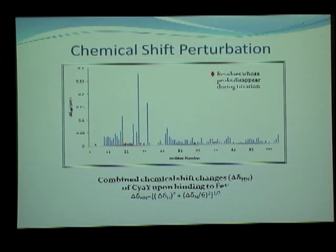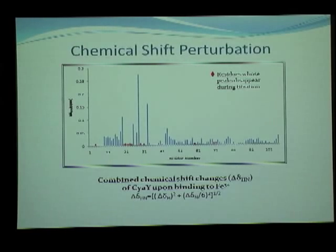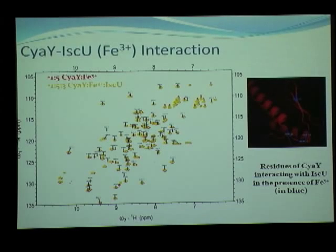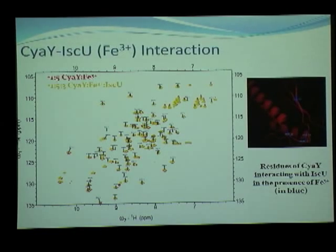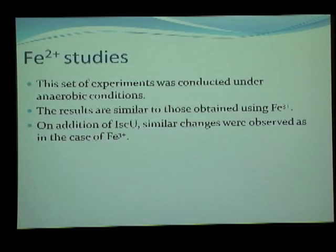The highest perturbation corresponds to residue 728, one of four key residues we identified. CyaY does not interact with ISCU alone, but we could observe interaction between CyaY and ISCU in the presence of iron(III) — four residues showed subtle changes in their peaks upon addition of iron(III), showing possible interaction between CyaY and ISCU mediated by iron. Iron(II) studies were done in anaerobic conditions and we were able to reproduce almost the same results as obtained with iron(III) — the same residues showed changes.